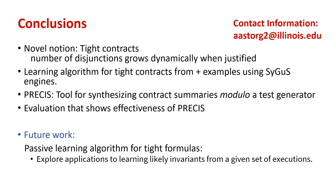To conclude, I hope you can remember two major things: a notable notion of tight contracts, which negotiates disjunctions and the strength of contracts by dynamically growing the number of disjunctions when justified, and the learning algorithm for tight contracts from positive examples that uses SyGuS engines. We also implemented our learning framework in the tool Prissy, which synthesizes decisive contracts modulo the test generator. Our evaluation shows that Prissy is very effective. For future work, we plan on exploring other applications of learning likely invariants from a given set of executions, as we believe our passive learning algorithm for tight formulas is very effective.